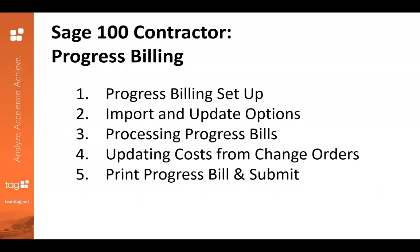The first is progress billing setup — that's where you'll put in all of your information. We'll talk about the import and update options to allow you to get away from manually creating those, so you'll be able to bring in all of the detail from your budget and make changes from there. Automation is super key with any area of Sage 100 Contractor. Then we'll talk about processing the progress bills, updating costs from change orders, and how you print and submit these and what formats are available.